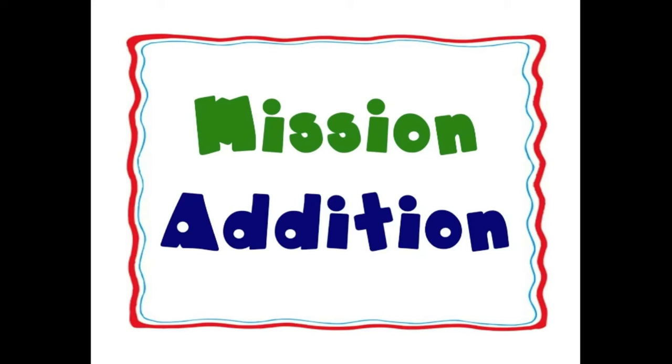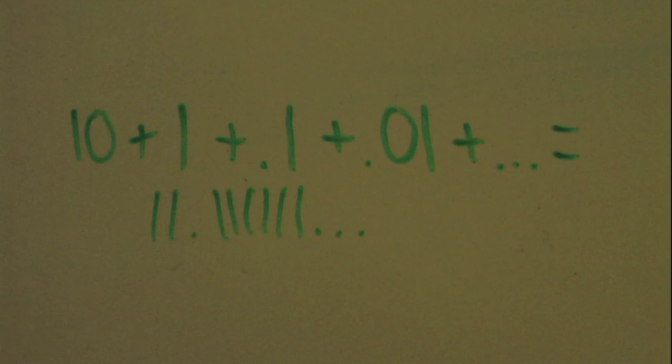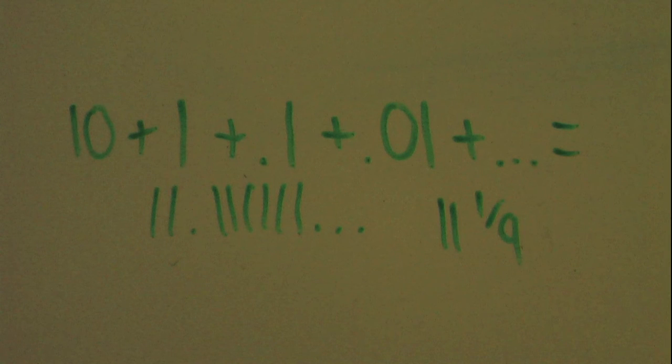First, let's add up all the distances Achilles must cover. There's an infinite amount, but let's try and find a pattern. There's the initial 10 meters, then there's the next one meter, and then a tenth, and a one-hundredth. This gives us a value of 11.11111 repeating, if we go on forever, otherwise written as 11 and a ninth, which is a finite sum.